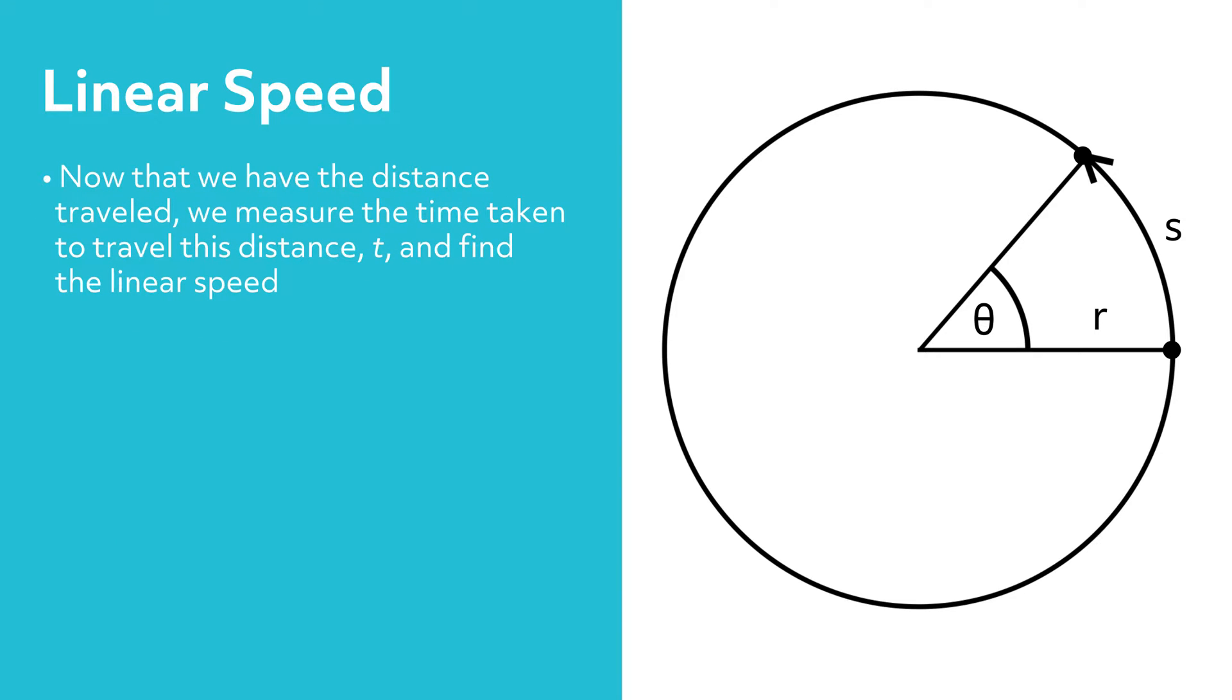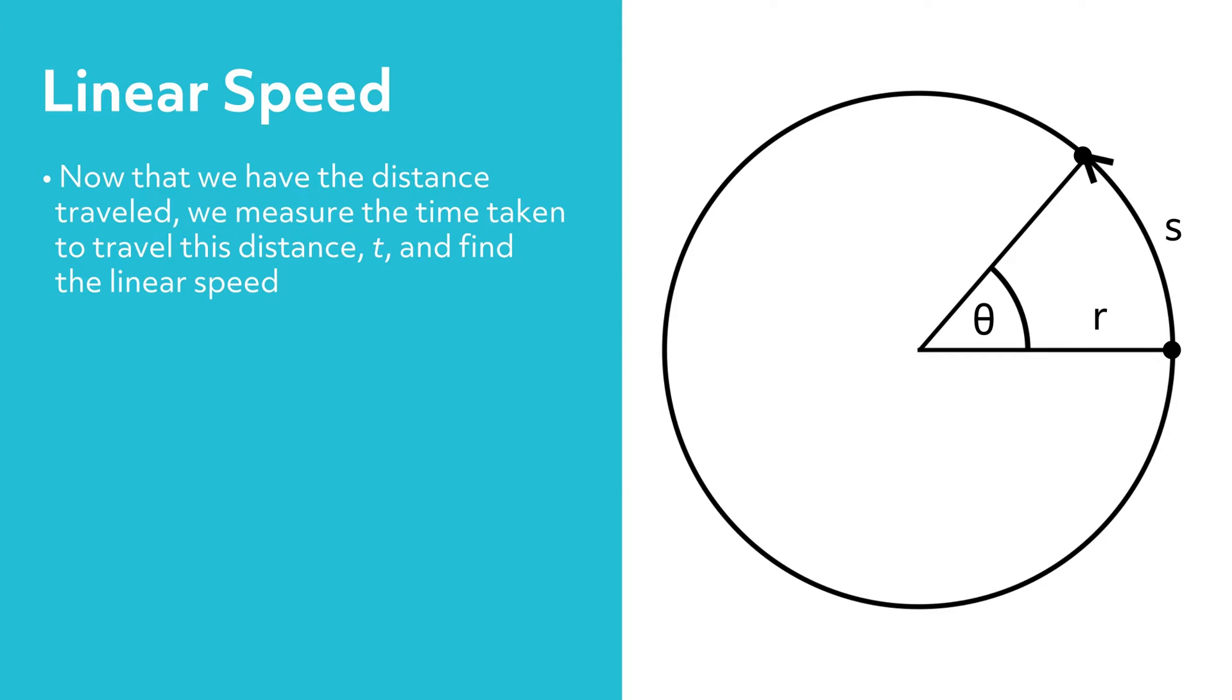Now that we have the distance traveled, we measure the time taken to travel this distance, t, and find the linear speed. Linear speed is equal to s over t, which is equal to r times theta over t.